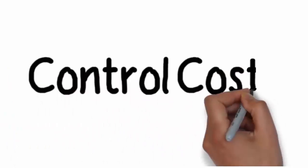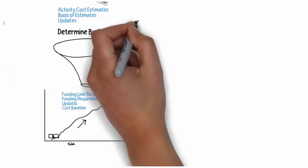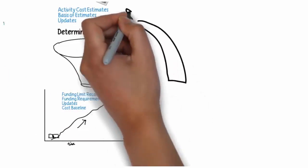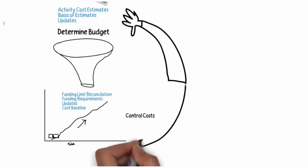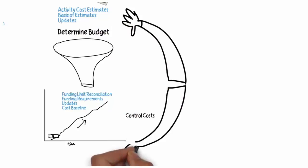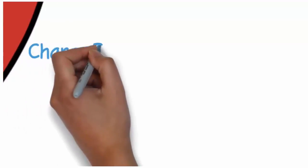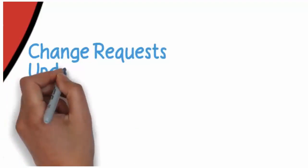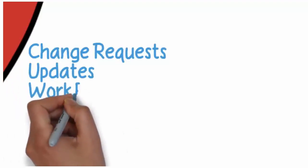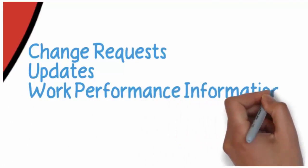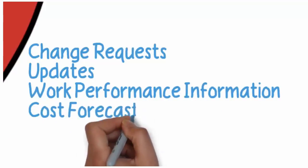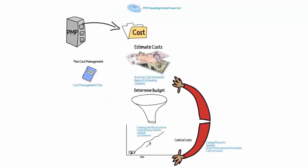The only other process as part of this is control costs, which is essentially keeping your arms around it — making sure it doesn't go out of hand or beyond the budgetary expectations we have for the project. This is a monitoring and control activity. As an output, we might need to change things, so we would have requests for changes, updates, and work performance information showing how things are going. And that's a quick look at the cost management knowledge area.